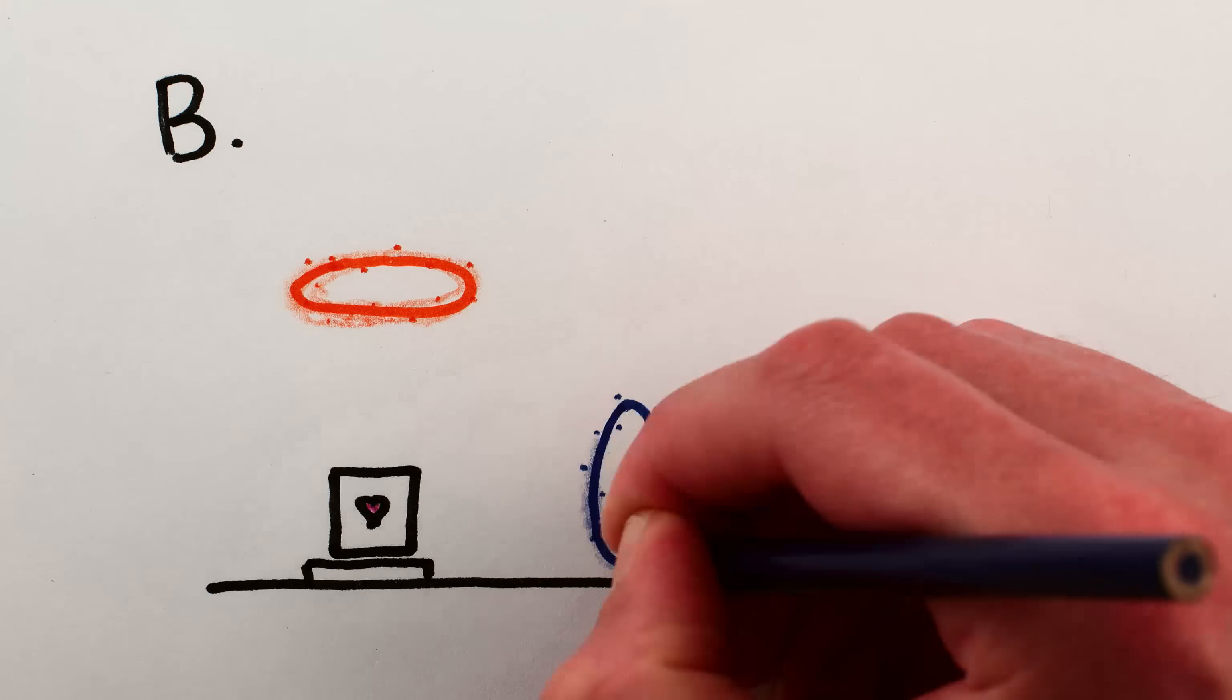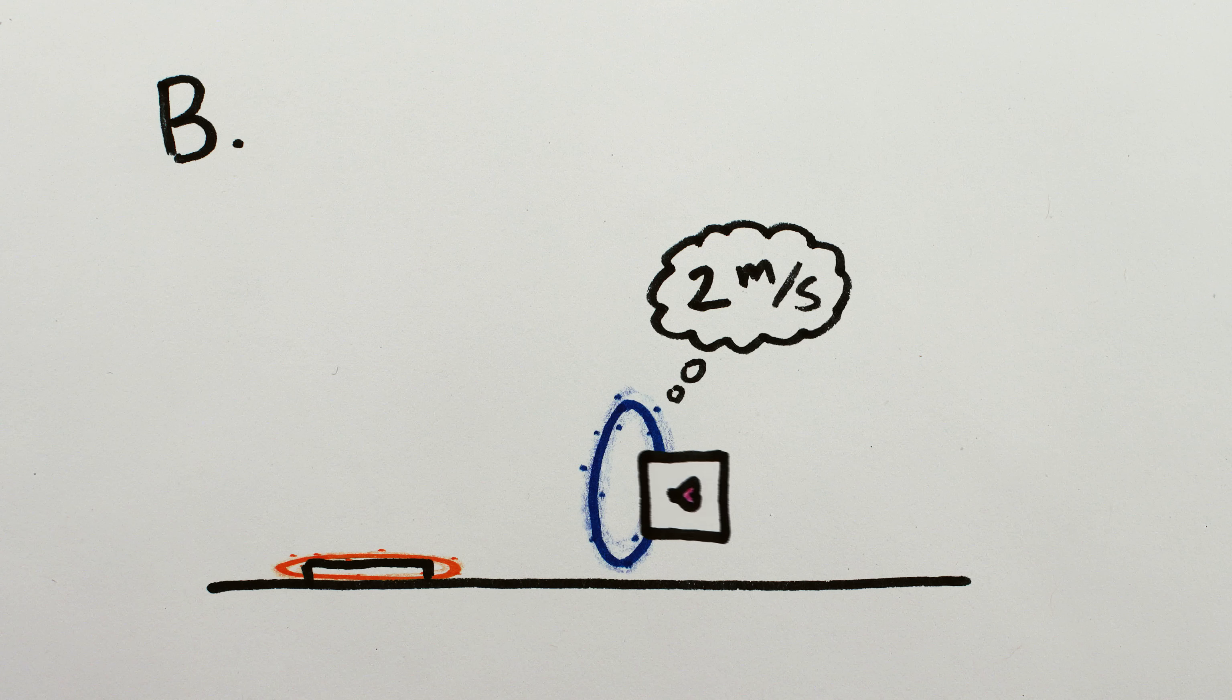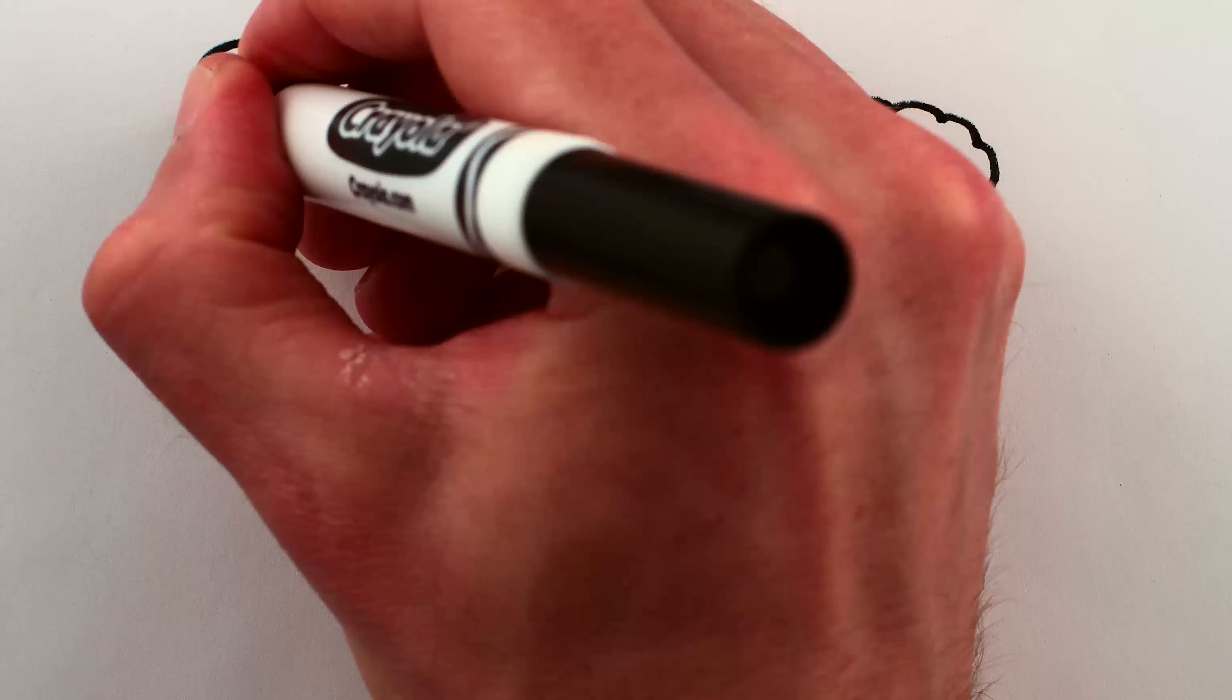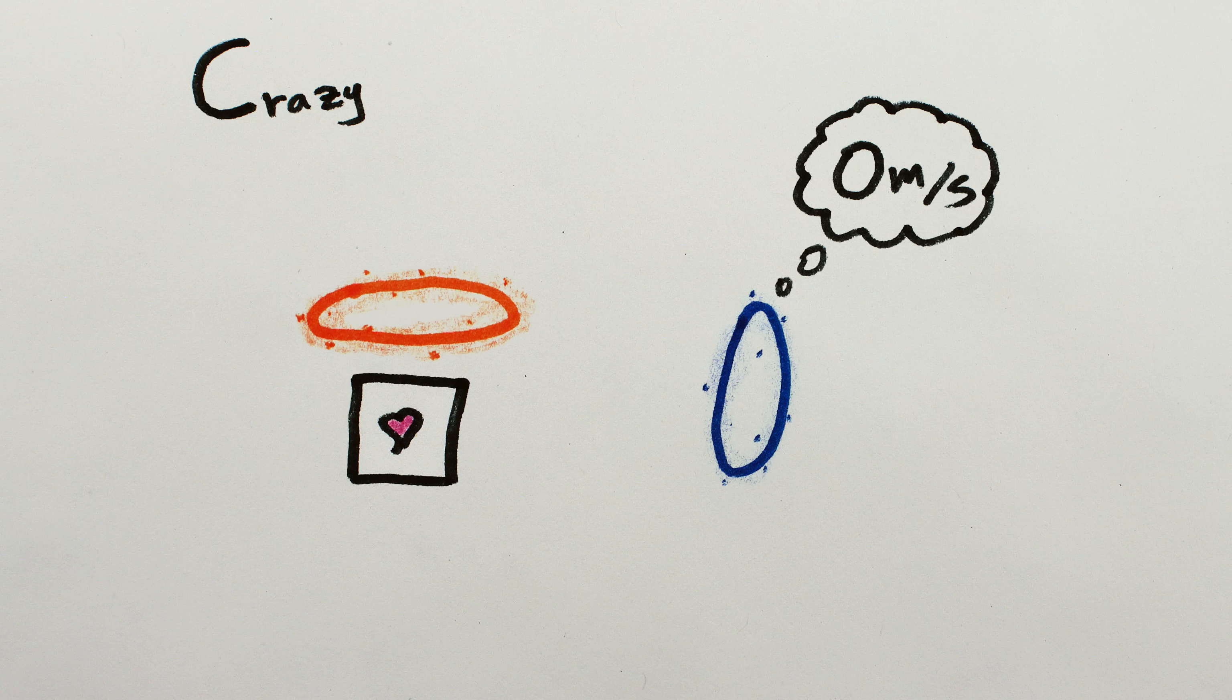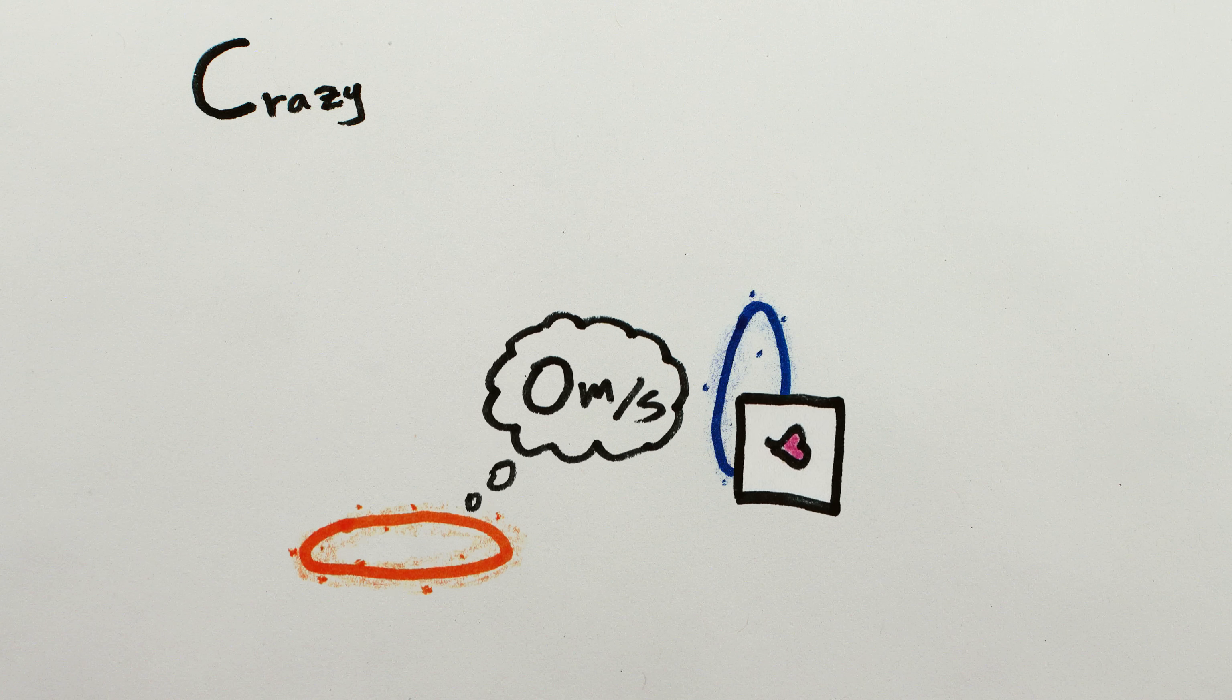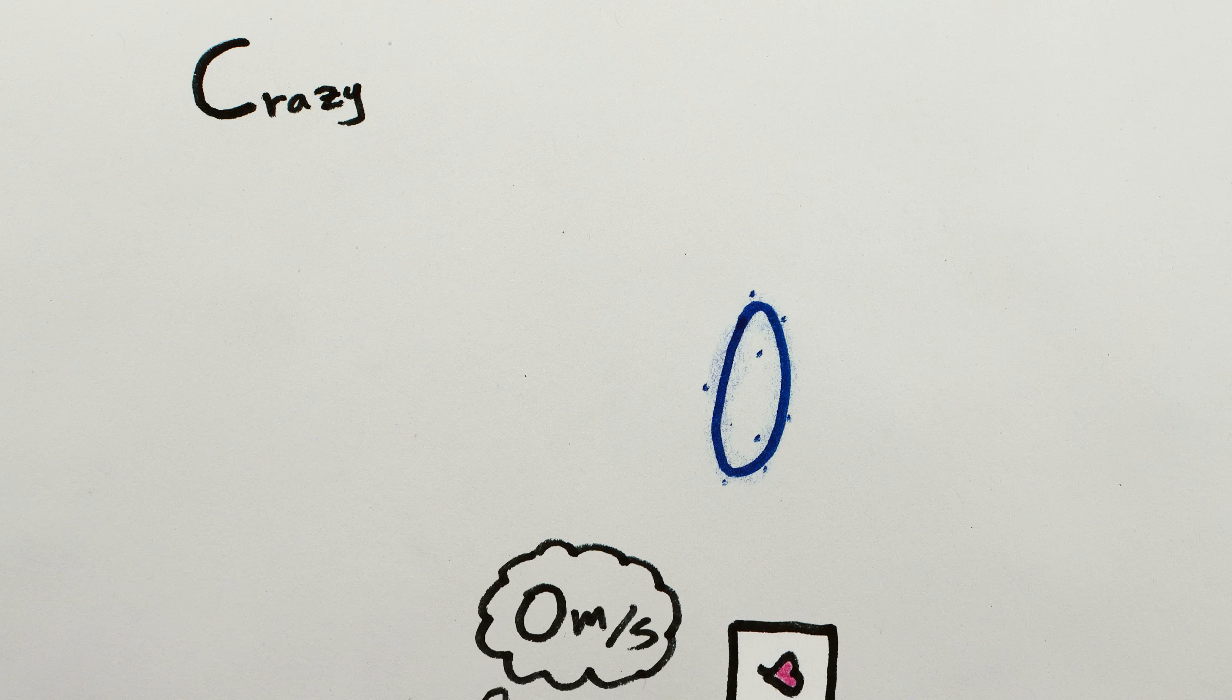Or perhaps the speed an object has relative to the portal it enters is the same as the speed it has relative to the portal it exits. This one is option B. Or perhaps objects enter and exit at a constant speed relative to the end of the portal they're not using at the moment. It's a valid possibility, although it's kind of weird.